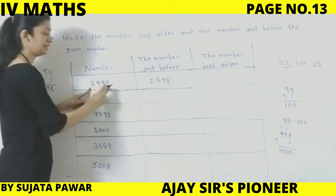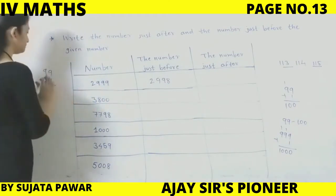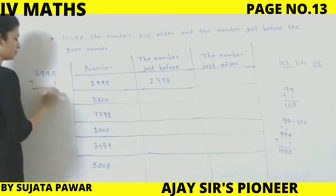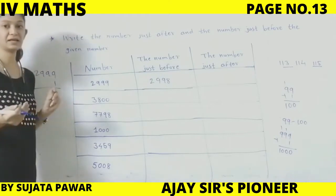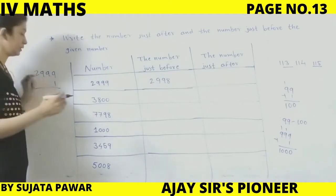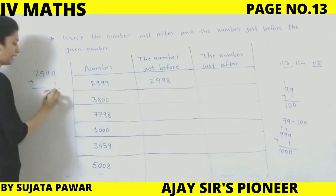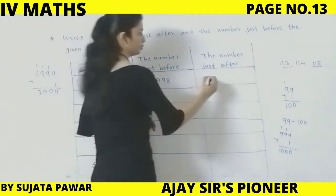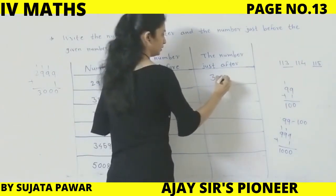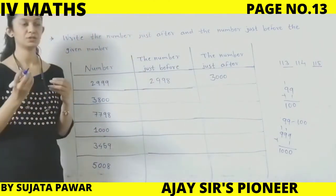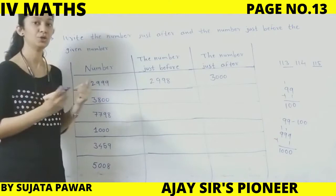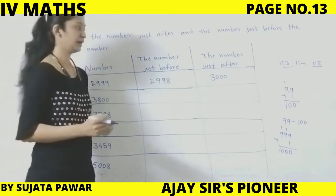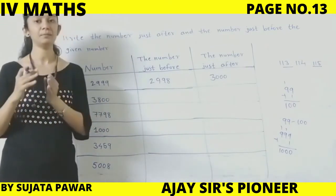So 2999 after is 3000. 2999 plus 1 — just one step aage jaana hai. 9 plus 1 is 10, carry over, and so we get 3000. Agar aapko calculation mein confusion ho raha ho ya difficulties lag rahi ho, to aap one number ko add karke after number likh sakte ho. And before number ke liye humein 1 minus karna hoga.